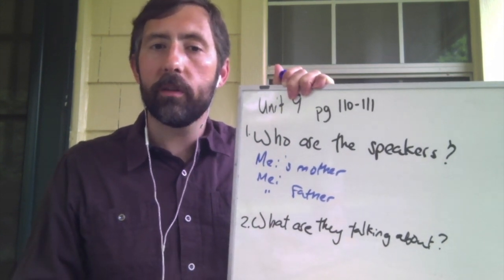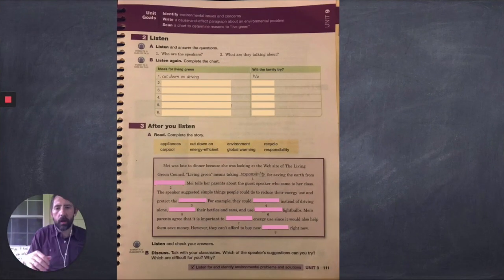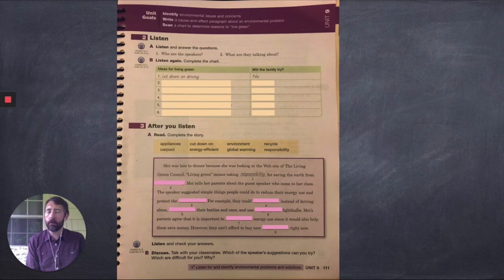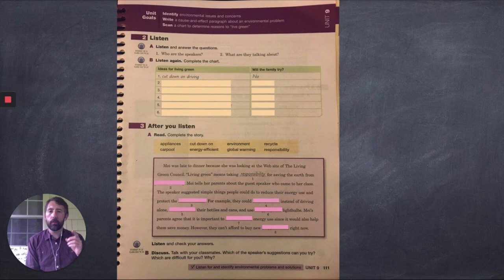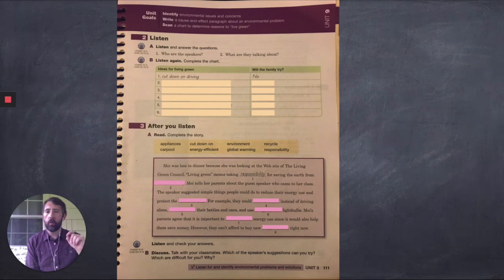I want you to listen to the story again. On page 111 there's a chart I want you to look at. Listen for ideas for how May and her family can live green. For example, the first idea given is 'cut down on driving' — and the answer to whether the family will try this is no, because the dad's job is an hour away with no bus service. Listen one more time for five more ways or ideas for living green, and also whether the family will try each idea. When you come back, we will go over the answers together.